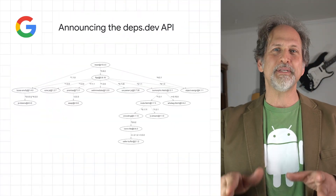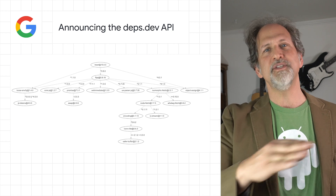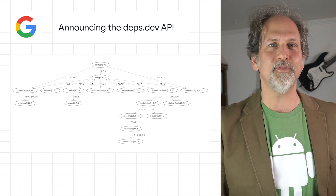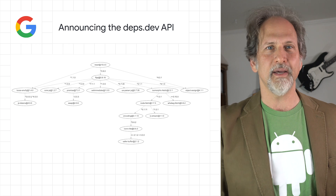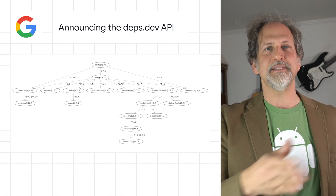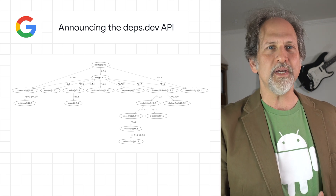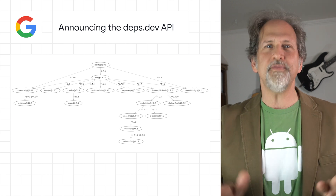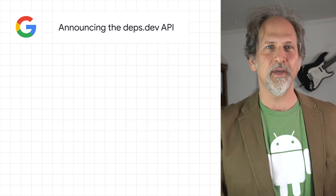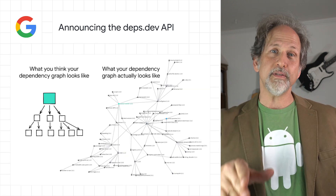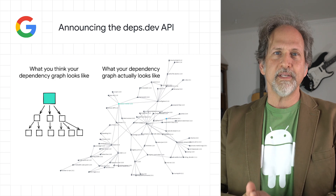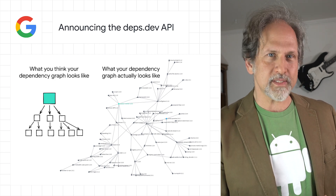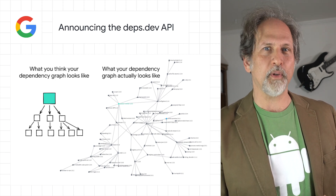We announced the deps.dev API, which provides no-cost access to the deps.dev data set of security metadata, including dependencies, licenses, advisories, and other critical health and security signals for more than 50 million open-source package versions. By integrating this data into tools, workflows, and analyses, you can more easily understand the risks in your software supply chains.